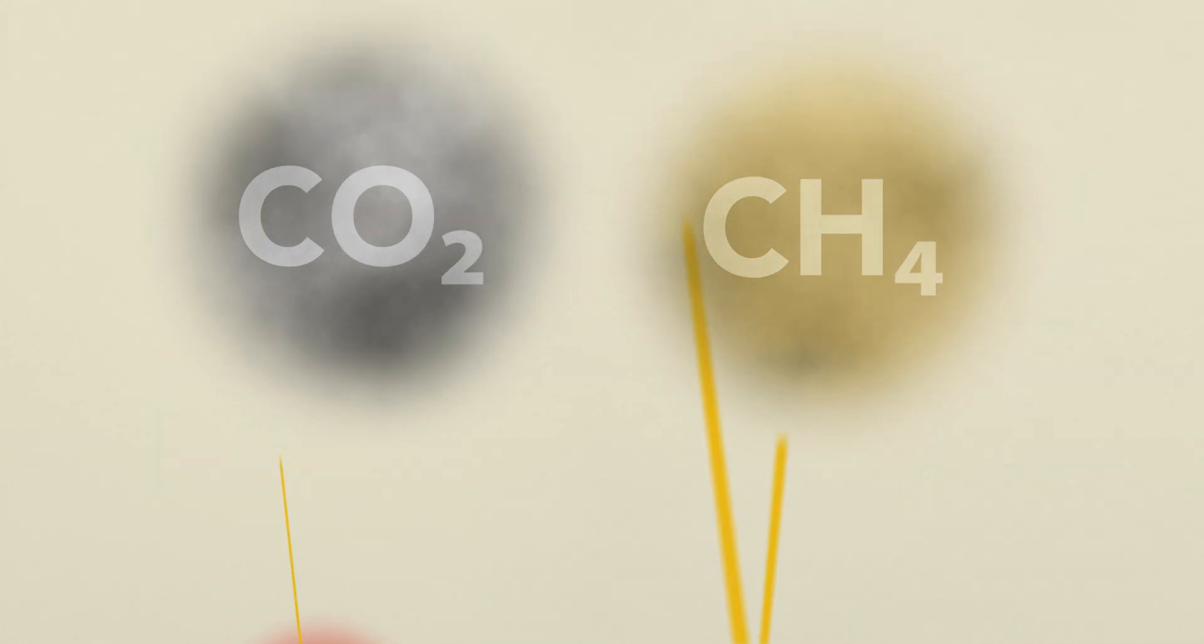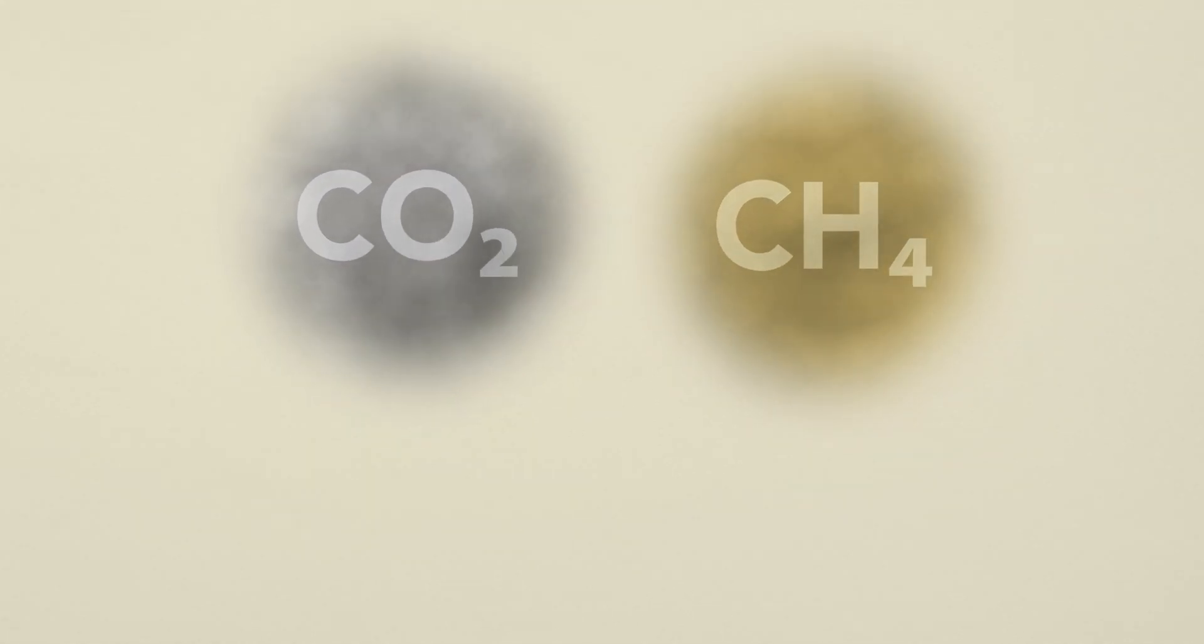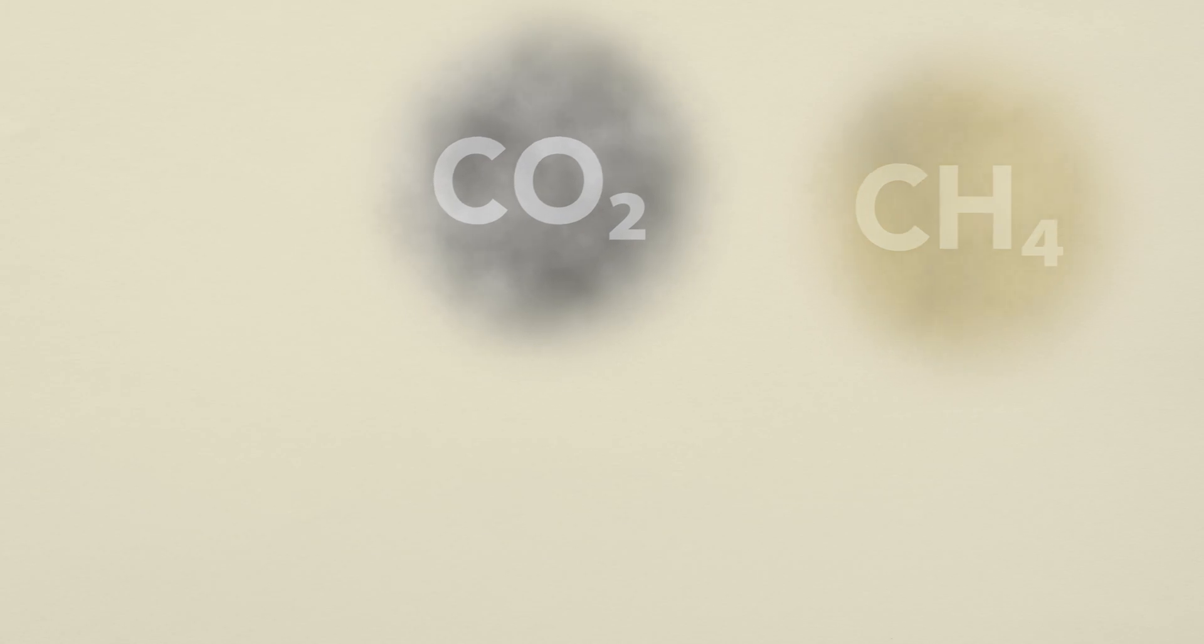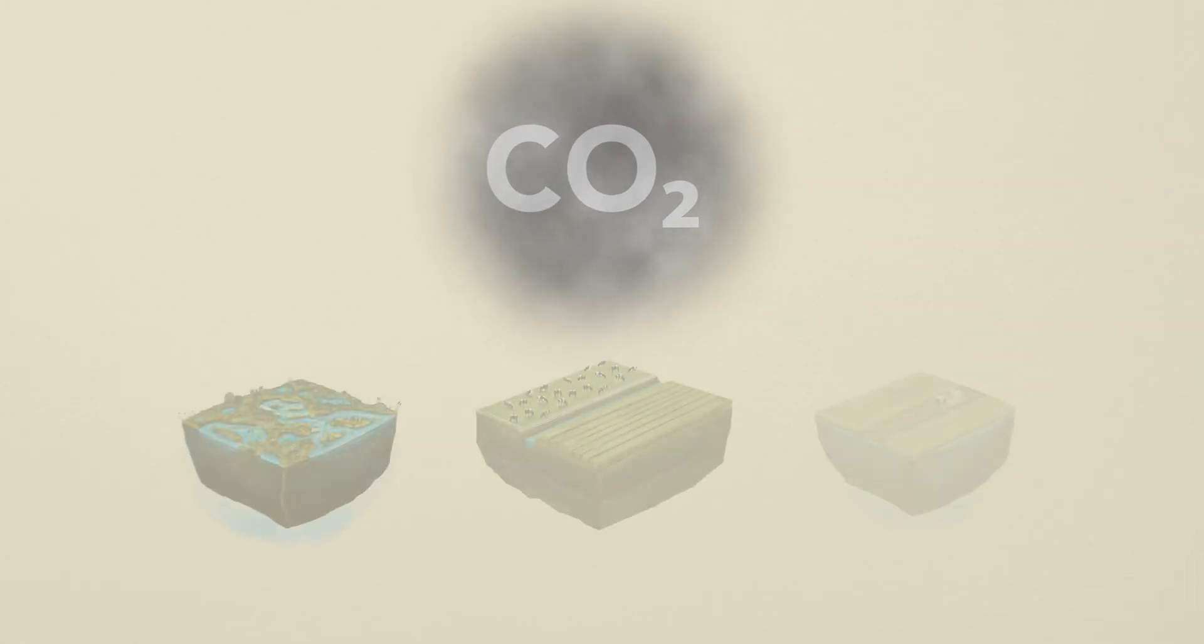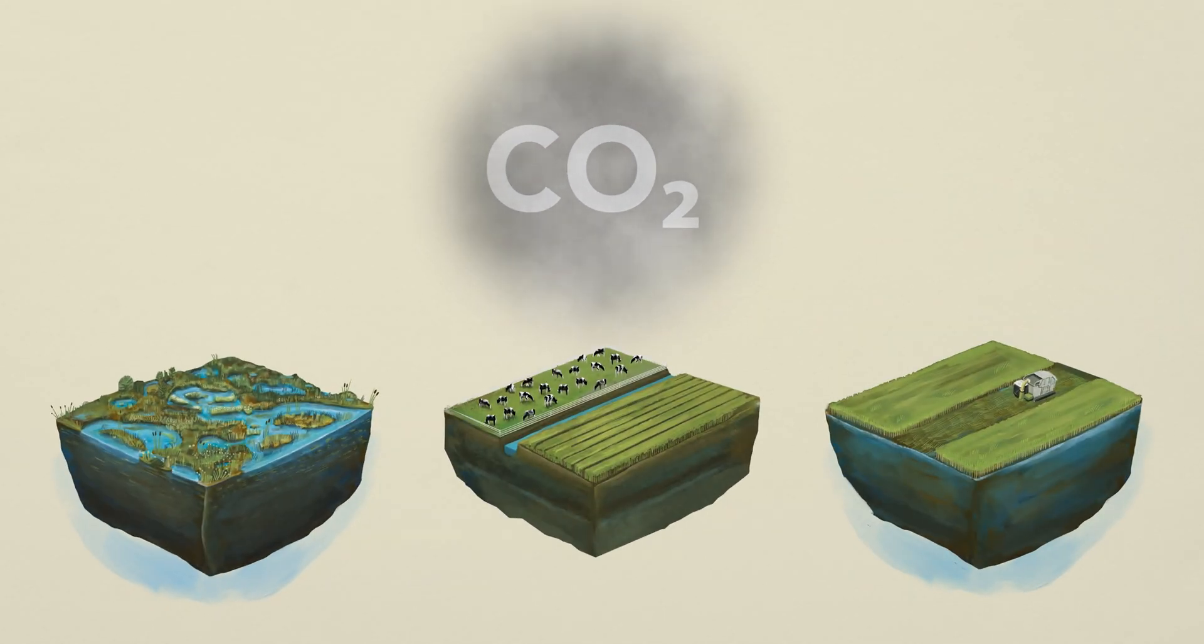Global warming potential is a single number metric that does not adequately address temporal aspects of radiative forcing when we compare drained and wet peatlands. For decision making and peatland re-wetting for the future generations, we need to focus on the mid- to long-term behaviour of greenhouse gases in the atmosphere. So let's have a closer look at the development of radiative forcings under different scenarios.